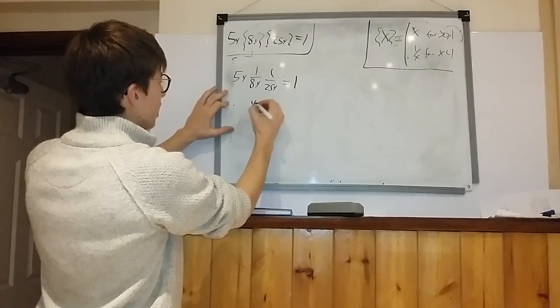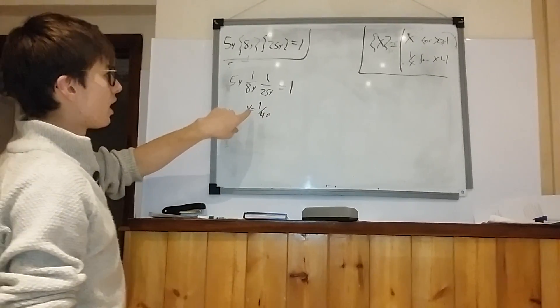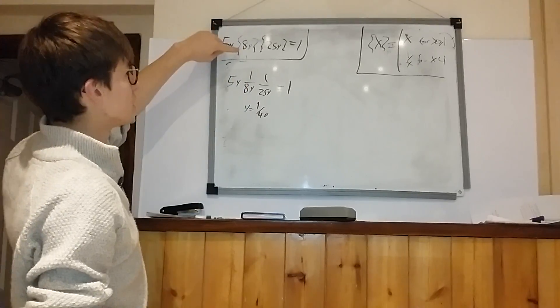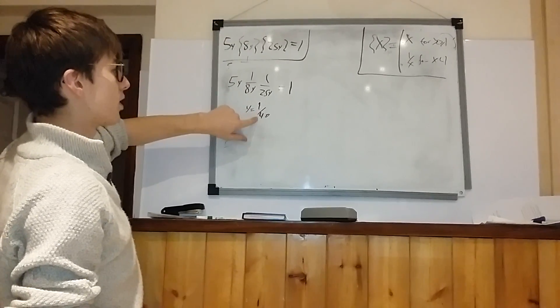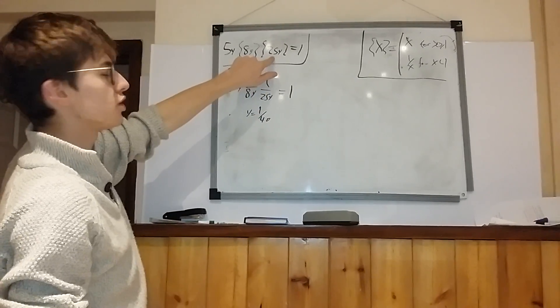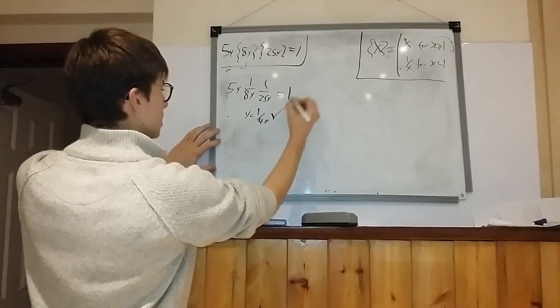So you get y is 1 over 40 when you do that. Which, when you plug 1 over 40 into this, you get something less than 1, so you clearly get 1 over 8y. So y is 1 over 40 is a solution.